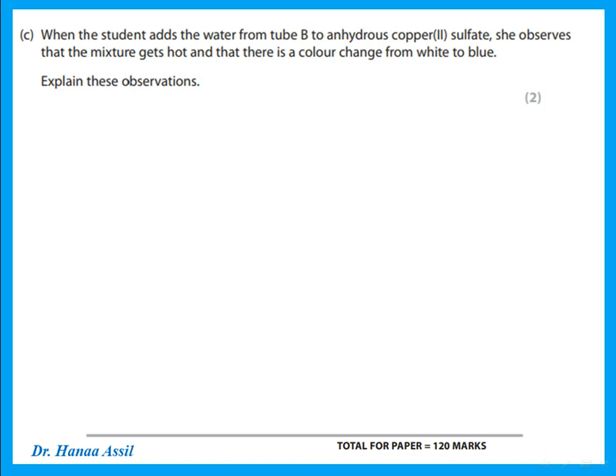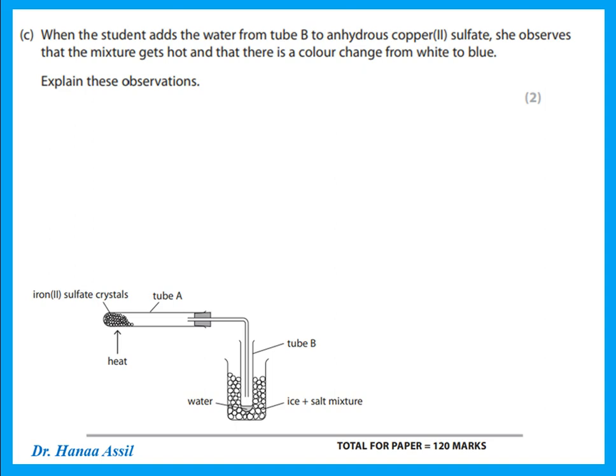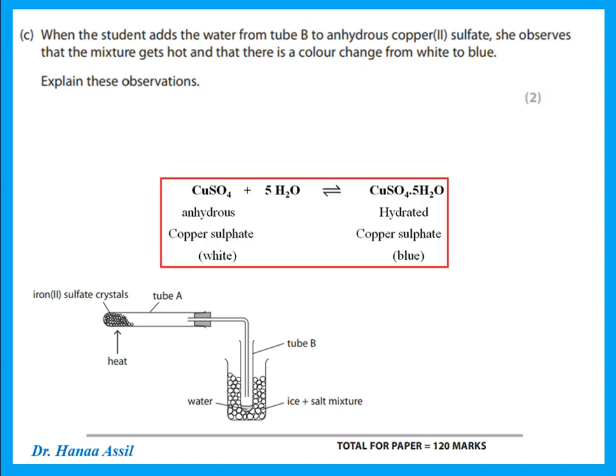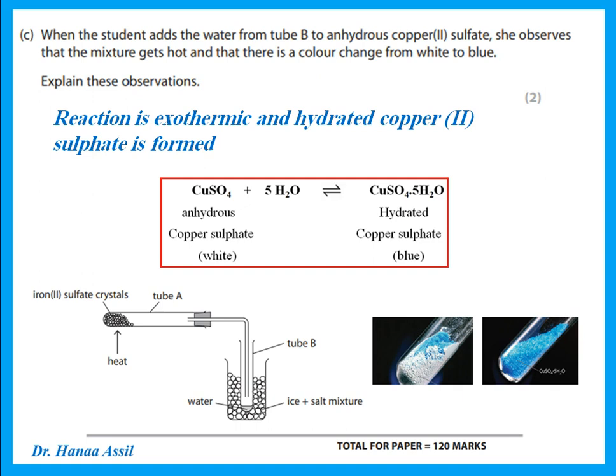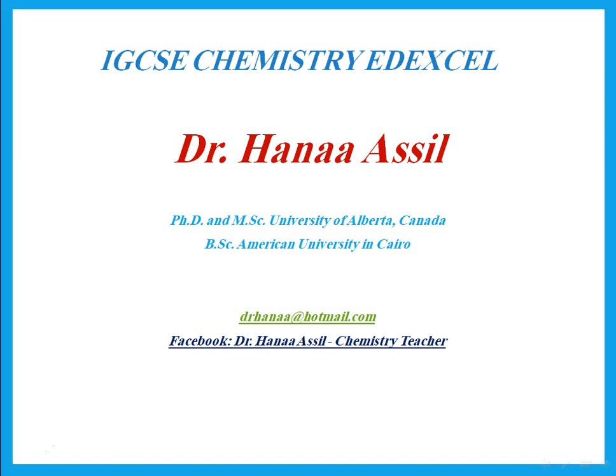When the student adds the water from tube B to anhydrous copper sulfate, she observes the mixture gets hot and there is a colour change from white to blue. The water is being added to anhydrous copper sulfate — this is the test for water. Adding water to anhydrous copper sulfate turns it from white to blue, forming hydrated copper(II) sulfate. The mixture getting hot shows the reaction is exothermic. The colour change from white to blue confirms it is changing from anhydrous to hydrated copper sulfate. That is the end of this paper — thank you for listening.